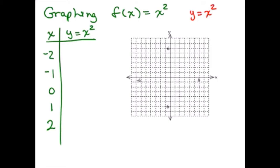So if x is negative 2, then y would be 4 — negative 2 times negative 2. When x is negative 1, we get 1. Zero squared is 0, 1 squared is 1, and 2 squared is 4. So those are the points on this graph.